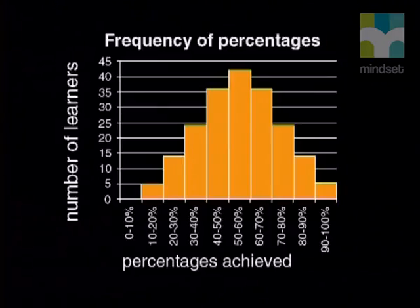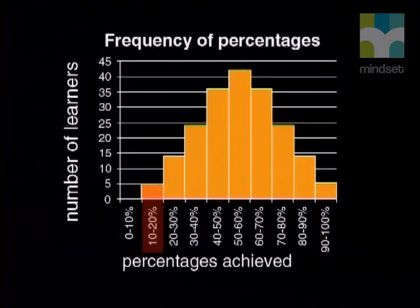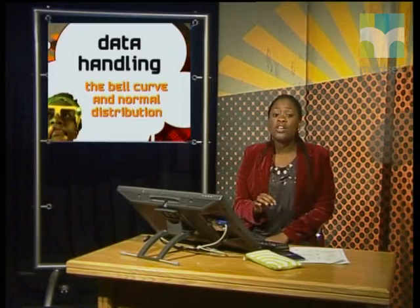Is it more realistic to say that most students will get some sort of mid-range mark, while a few will get very high marks and a few will get very low marks? If this were the case, the frequency distribution would look like this. Most students here achieve around 60%, while only 5 get between 90 and 100%, and only 5 between 10 and 20%. This shows that most students are similar in their results, while only a few get very high or very low marks.